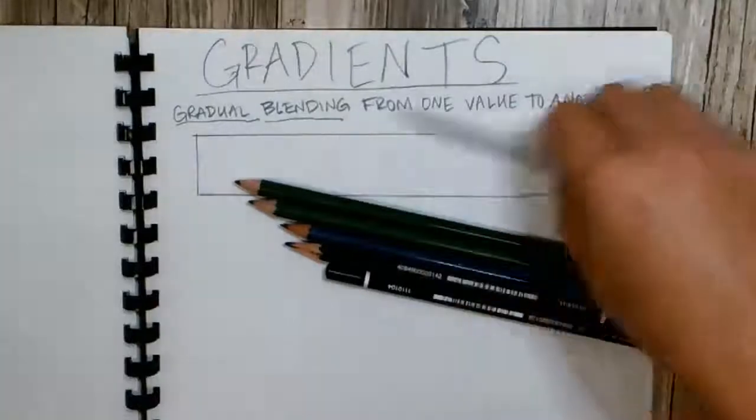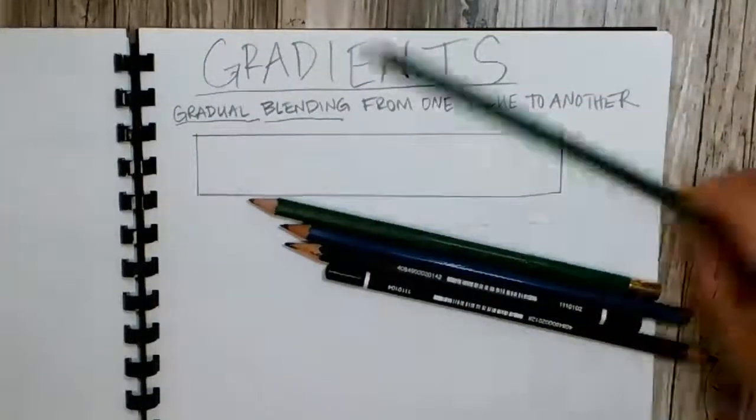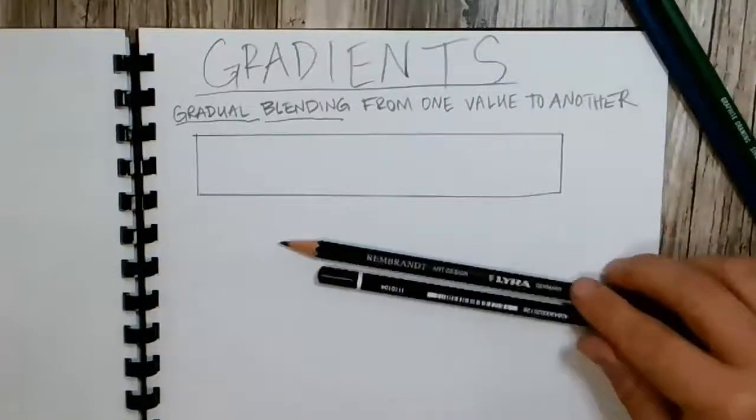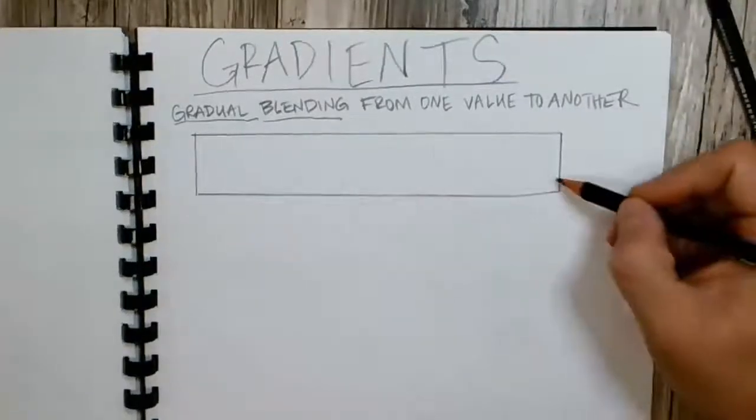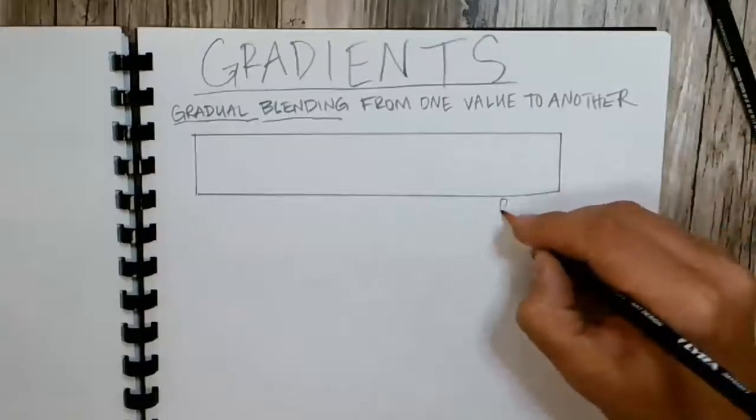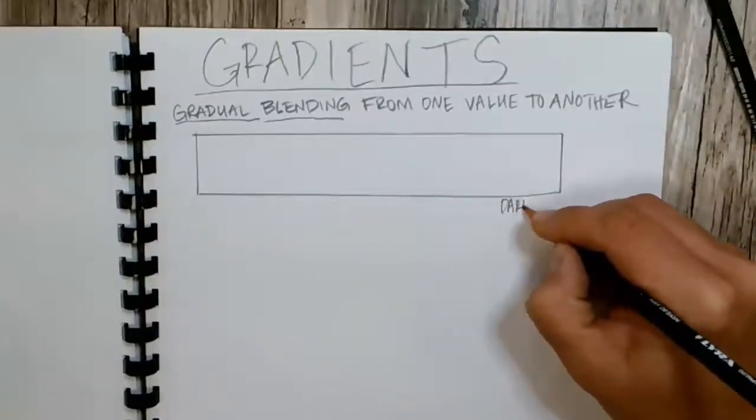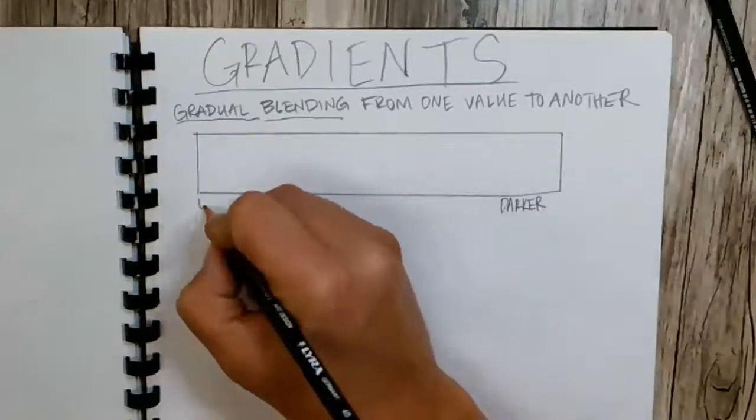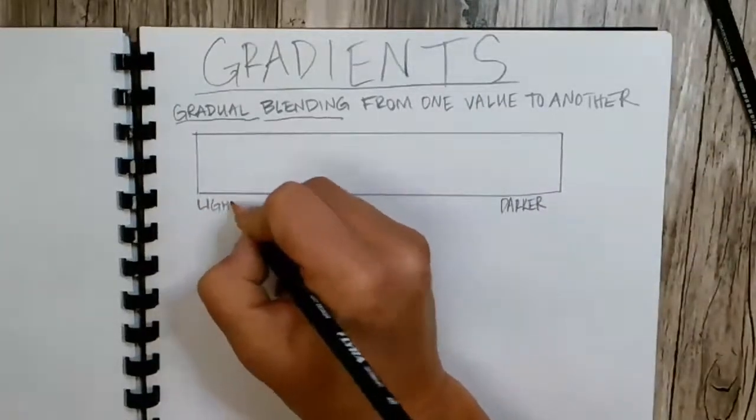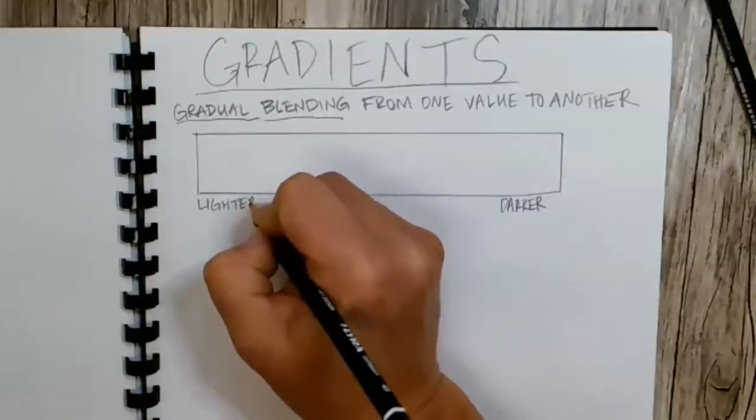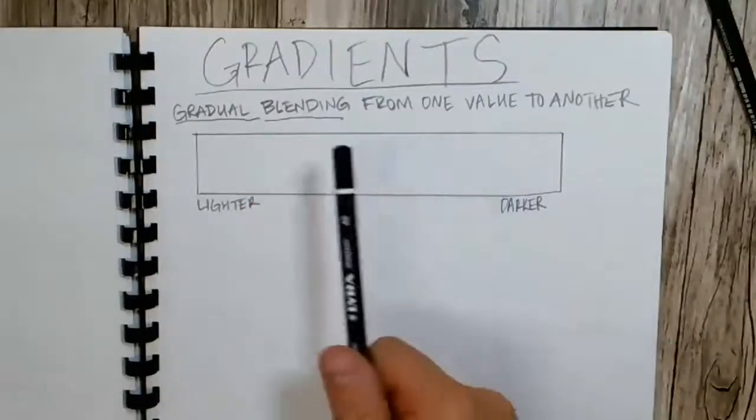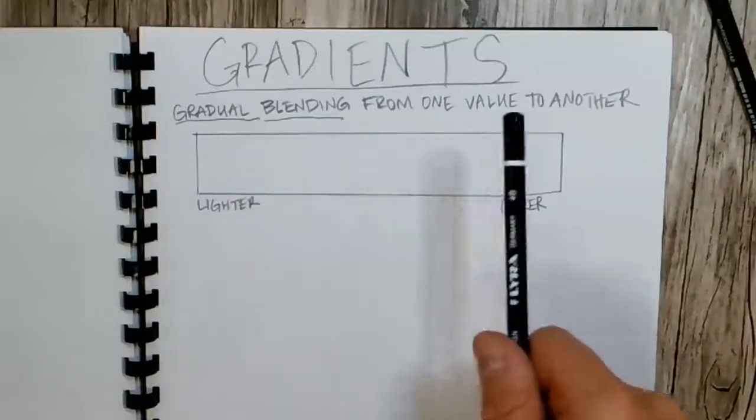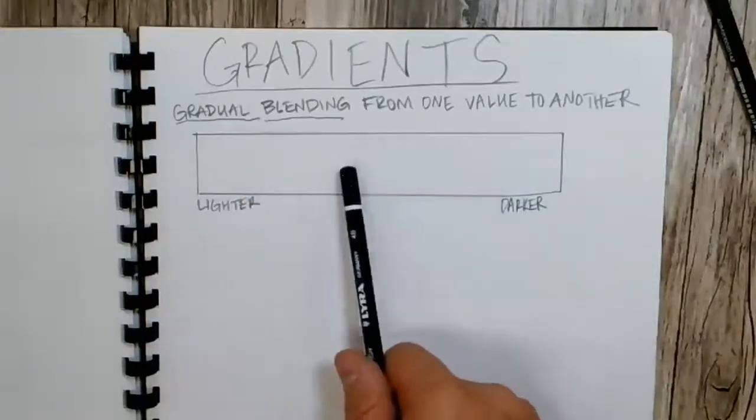So, we're going to start with our darkest pencil over here. So, this is going to be darker. Let's write darker. And this is going to be lighter. And we want it to be a gradual, even blend from one value to another.